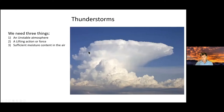For thunderstorms — which affect all pilots, because IFR pilots worry about embedded ones they can't see and VFR pilots want to stay clear — you need three things: an unstable atmosphere, a lifting action, and enough moisture. All three are necessary. I'll talk about how to read this from the Skew-T diagram shortly.